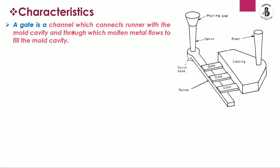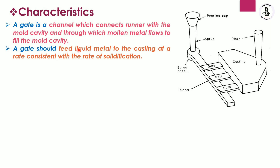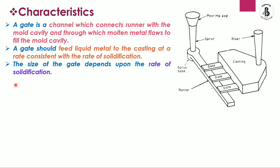A gate is a channel which connects the runner with the mold cavity, through which the molten metal flows to fill the mold cavity. A gate should feed liquid metal to the castings at a rate consistent with the rate of solidification. The solidification rate depends on the composition of the molten metal and the alloying elements used.